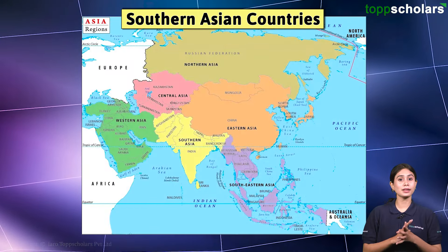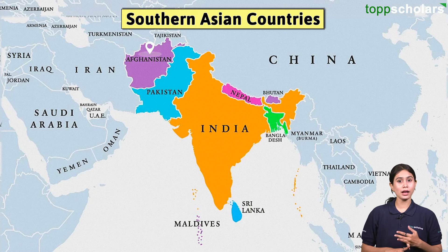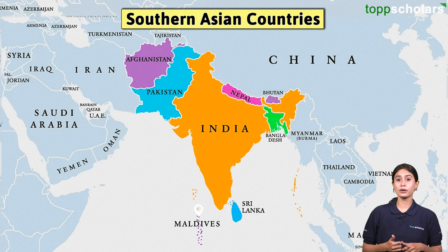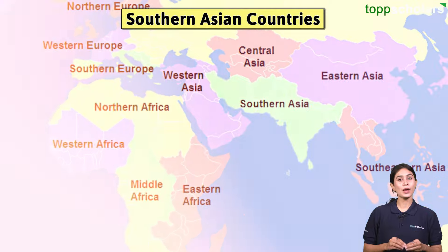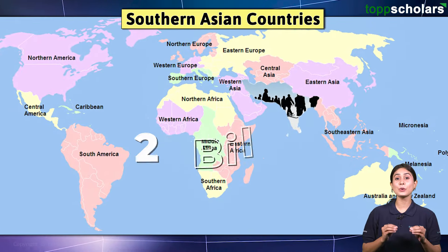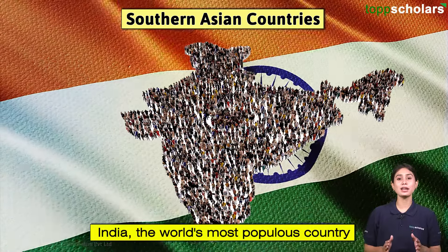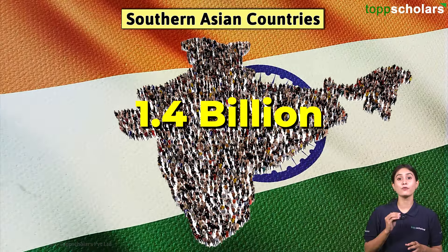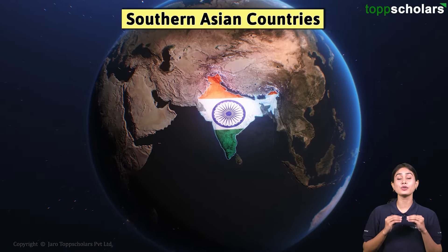Now let us look at the Southern Asian countries. It comprises eight countries: Afghanistan, Bangladesh, Bhutan, India, the Maldives, Nepal, Pakistan, and Sri Lanka. This is the most populous sub-region in the world, with a population of nearly 2 billion. India, the world's most populous country, has a population of approximately 1.4 billion, making it the most populous country globally.